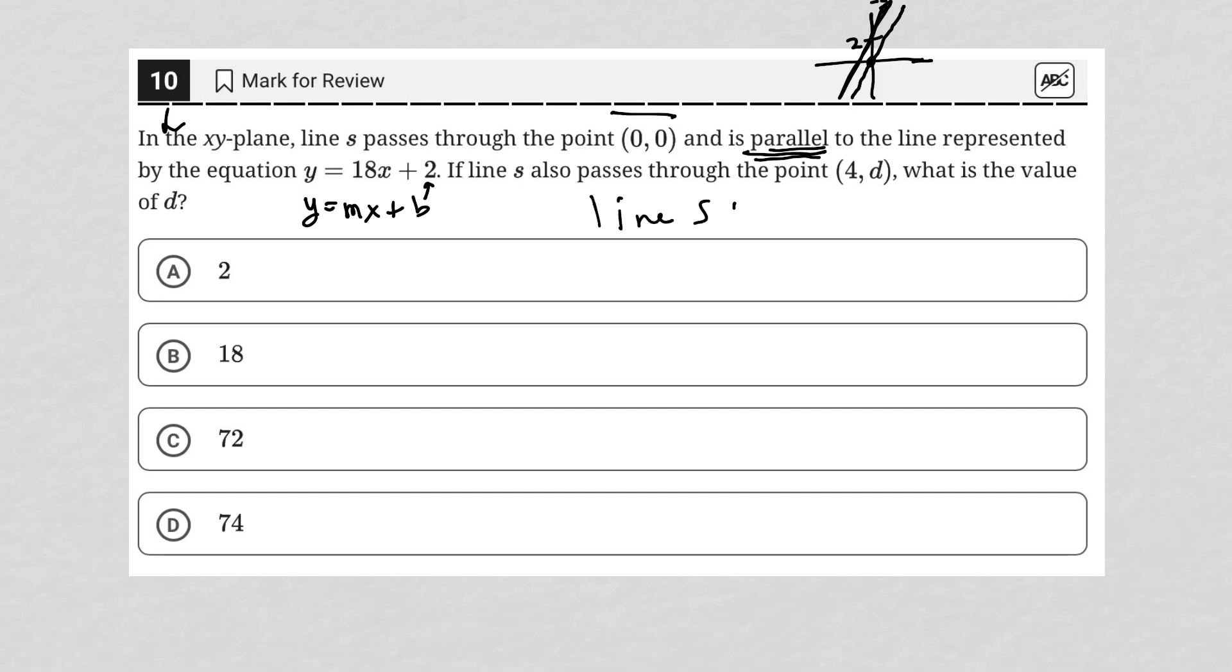For line s, I know that I have an x value at 0, a y value at 0, and a slope that is 18.